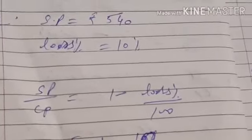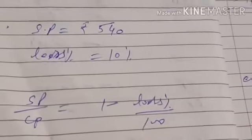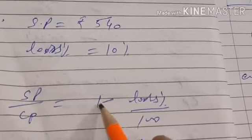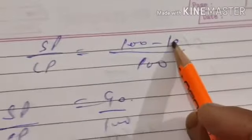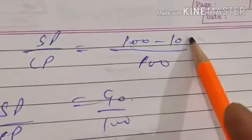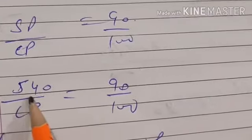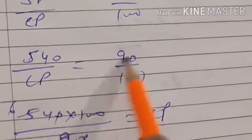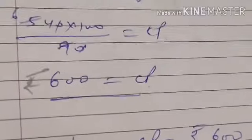We know SP upon CP equals 1 minus loss percent upon 100. Putting the values: SP upon CP equals 1 minus 10 upon 100, which is 90 upon 100. SP is 540, so 540 upon CP equals 90 upon 100. Simplifying, we get CP equals 600 rupees. So the cost price of the bag is rupees 600.